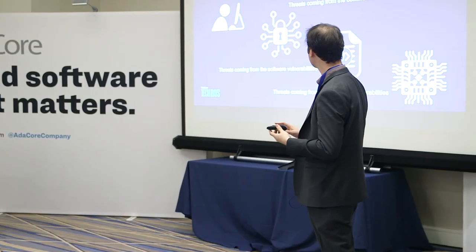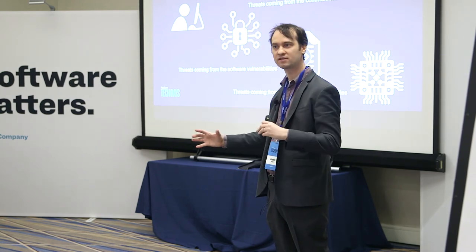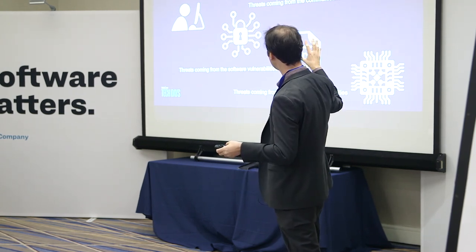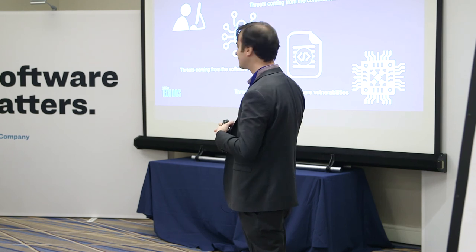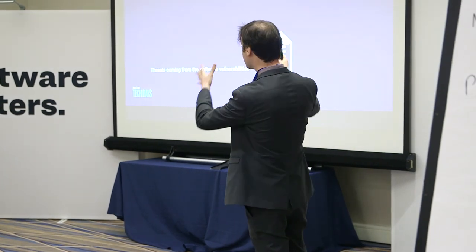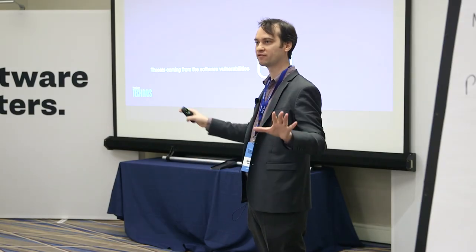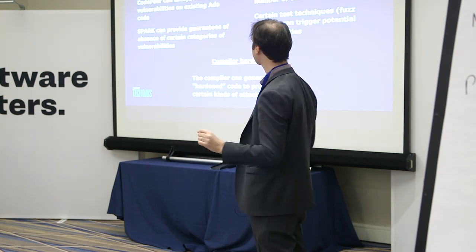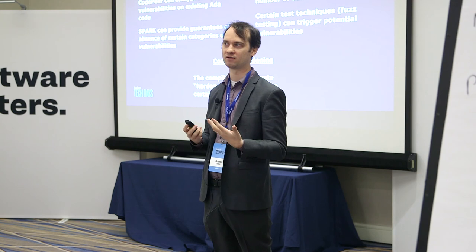There are arrays of threats that target specifically the software itself as interconnected components, and then last but not least there are threats down to the very hardware level. In this story, the weakest link of the chain is the one you want to strengthen first. At AdaCore we have expertise on the software aspect specifically, so what I'm going to talk about is how we can help you mitigate vulnerabilities pertaining to the software component, while acknowledging that there are many other things to worry about when it comes to cybersecurity.